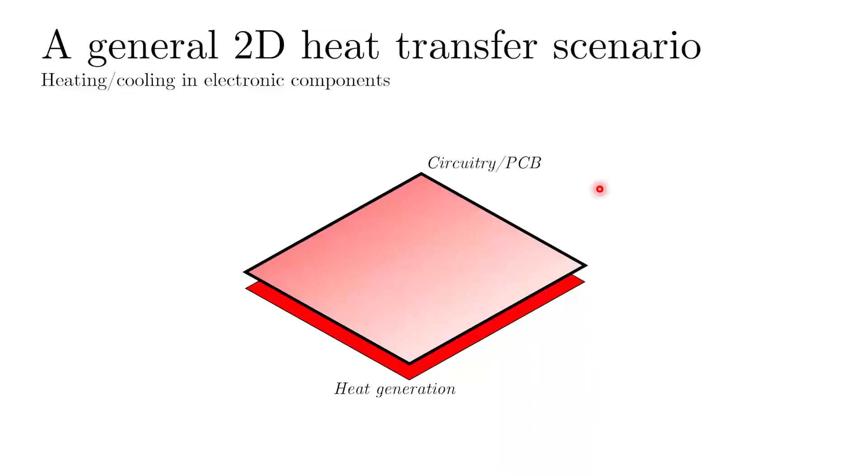So on the screen, I am trying to show you a very general 2D heat transfer scenario, which is basically taken from a case where we are trying to cool down an electronic component that is being heated. So consider that you have some sort of circuitry or a printed circuit board in some of your electronic system, which is represented by this black outline gradient filled square. And underneath that, you have some heat generating source.